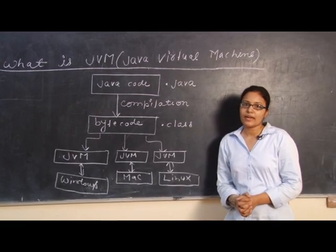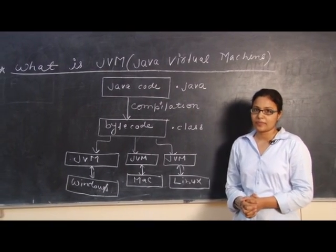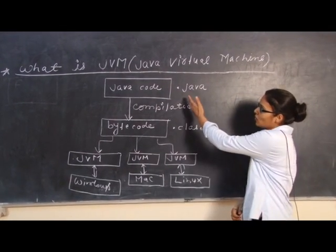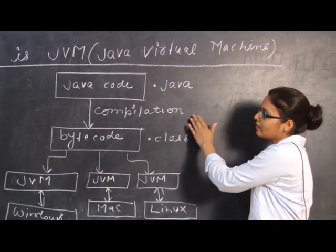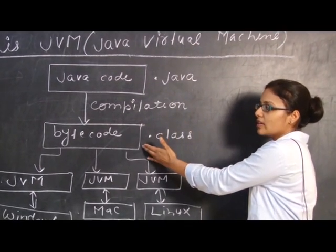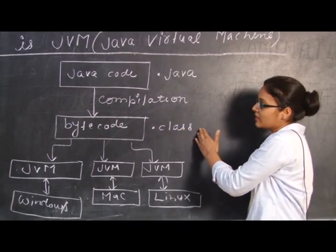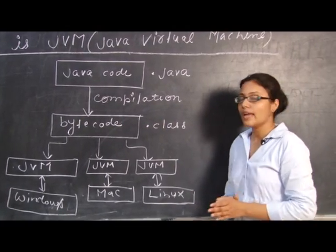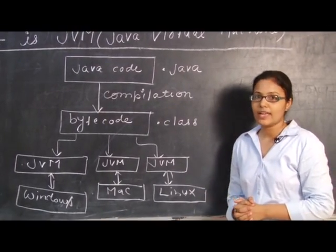As we know, Java is a platform independent language, meaning Java can run on any operating system. Here there is a Java source code file saved with the .java extension. When the .java file is compiled, the byte code is created — that is called the .class file. This .class file is called byte code and we can run this byte code on any operating system. Because of this byte code, Java is a platform independent language.